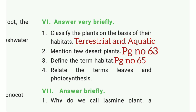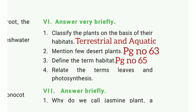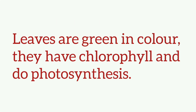Third question: Define the damp habitat. Refer to page number 65. The surroundings where plants live is called their habitat. Fourth question: Relate leaves and photosynthesis. The answer is leaves are green in color; they have chlorophyll and do photosynthesis.